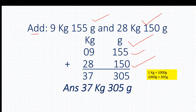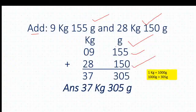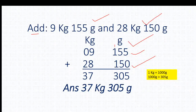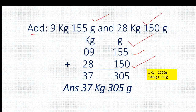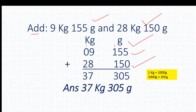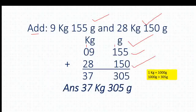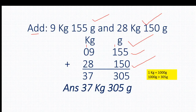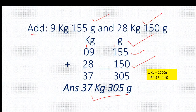Now we do addition: 5 plus 0 equals 5. 5 plus 5 equals 10 — 0 we write here and 1 will be added to the next column, as 100 gram means 1 will be carried. So 1 plus 1 plus 1 equals 3. And 9 plus 8 equals 17 — 7 written here and 10 kg means 1 will be added to the next column. So 1 plus 0 plus 2 equals 3. Our answer is 37 kg 305 gram.